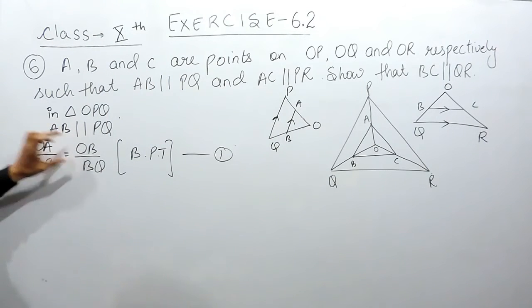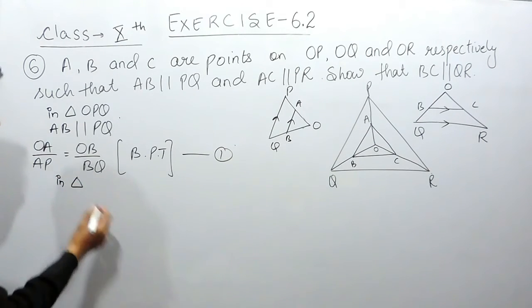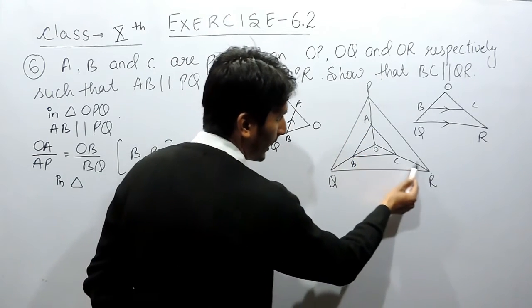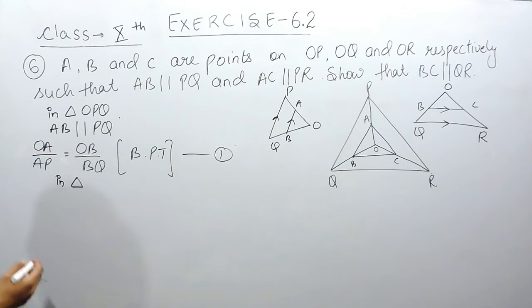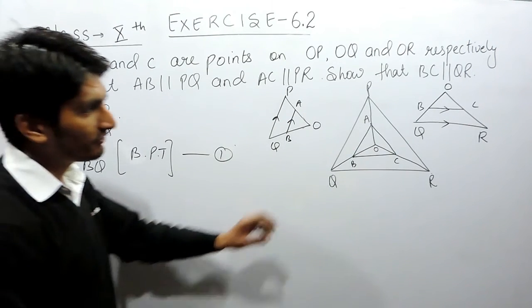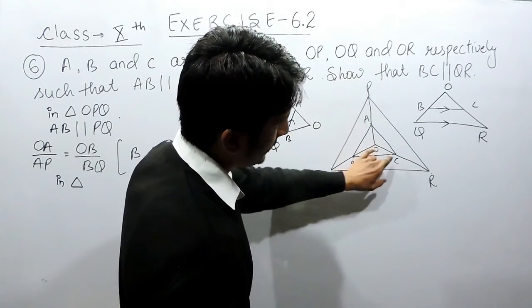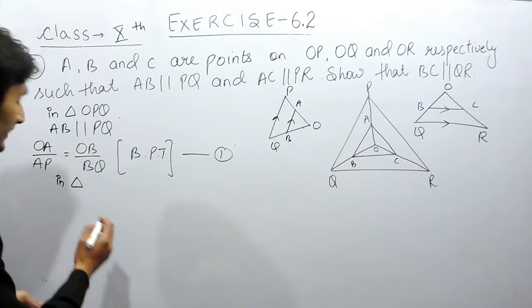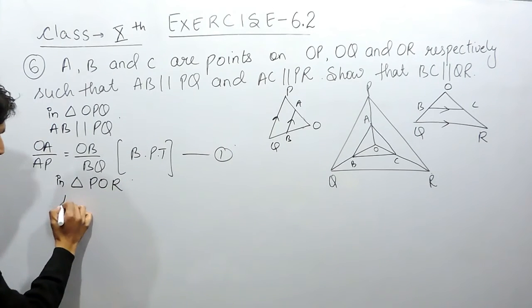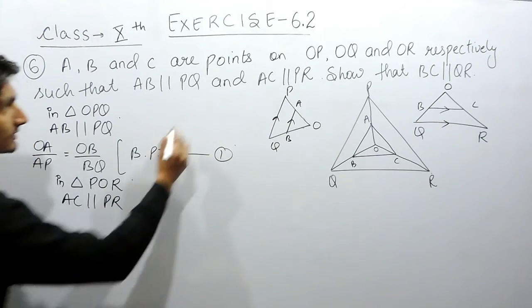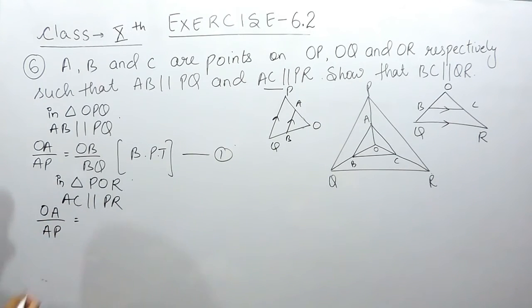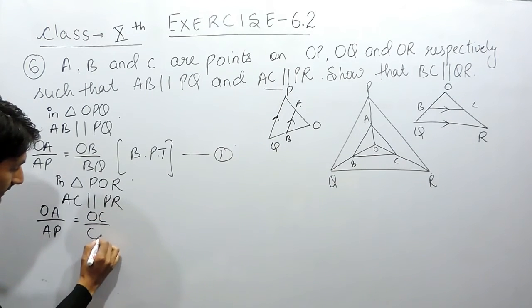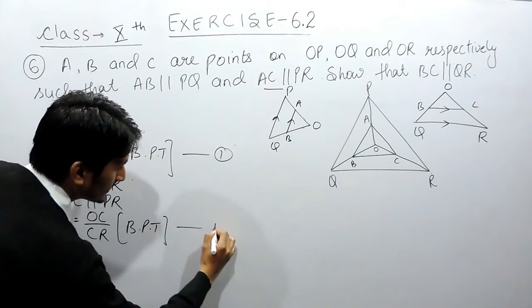Similarly, in triangle OPR, AC is given parallel to PR. According to the basic proportionality theorem, the ratio between OA and AP must be equal to OC upon CR. This is our second equation.